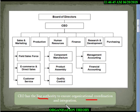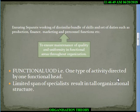The CEO has line authority to ensure organizational coordination and integration. In this particular functional structure, we are ensuring separate working of dissimilar bundles of skills — those skills which are not similar to each other are being separated.